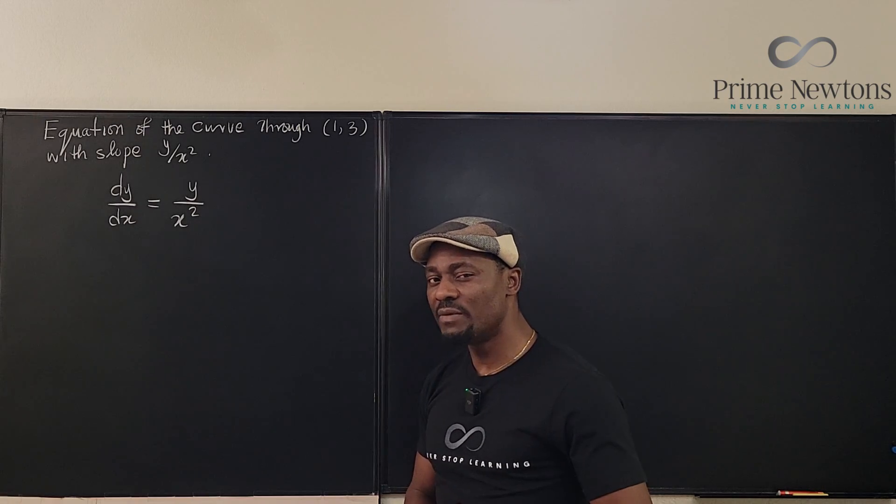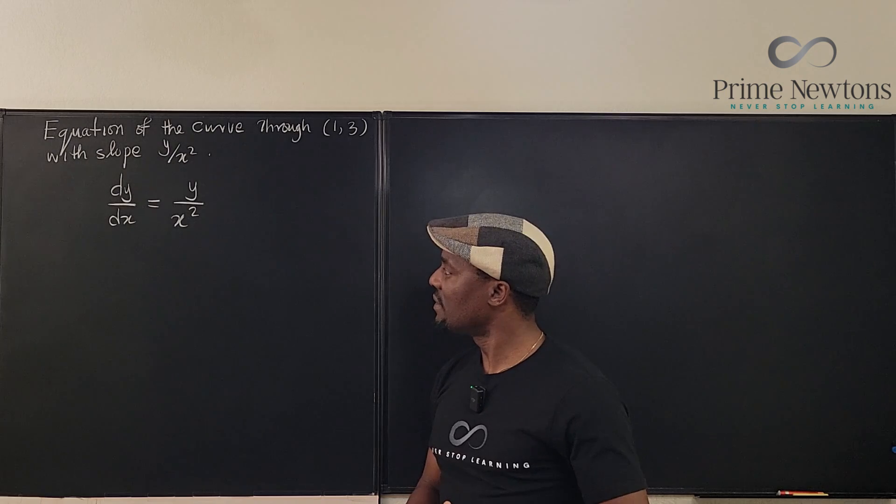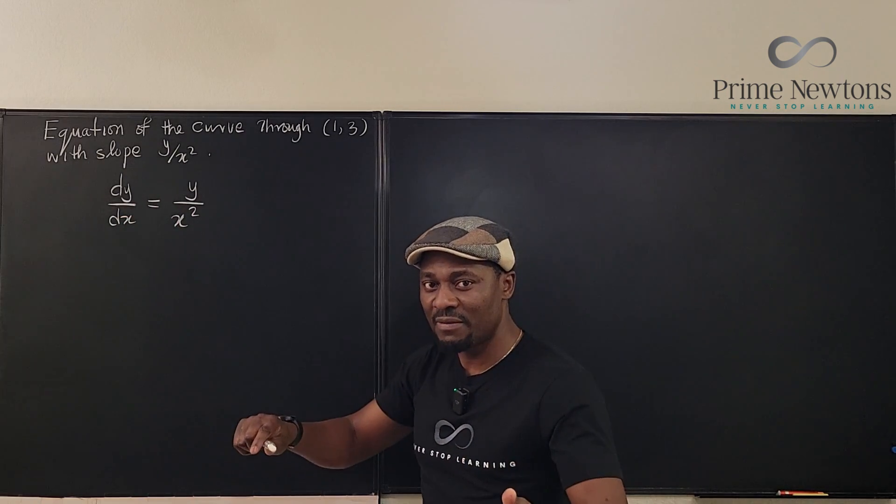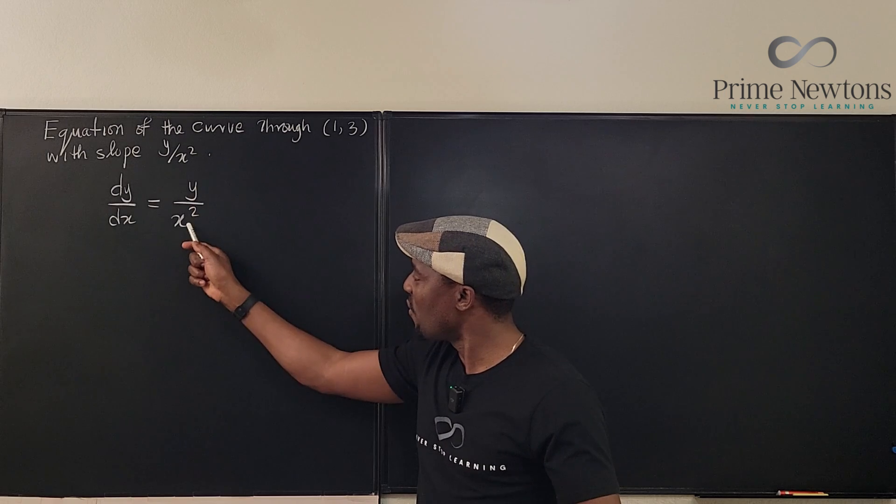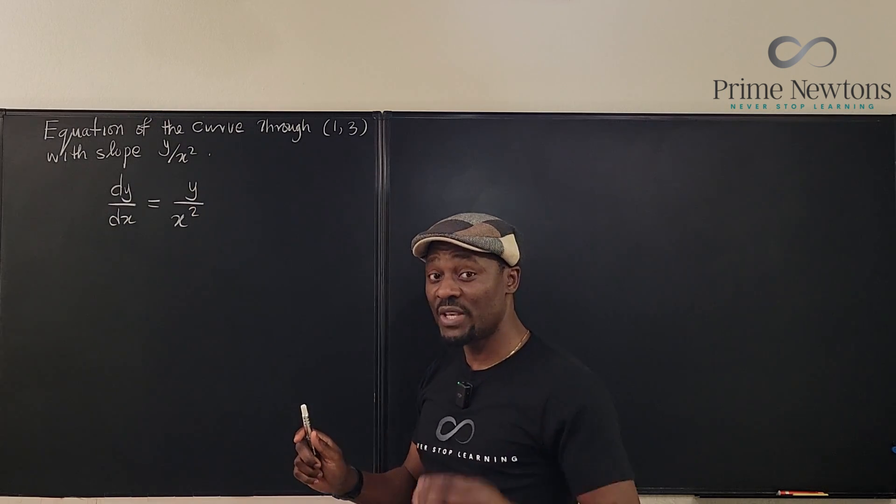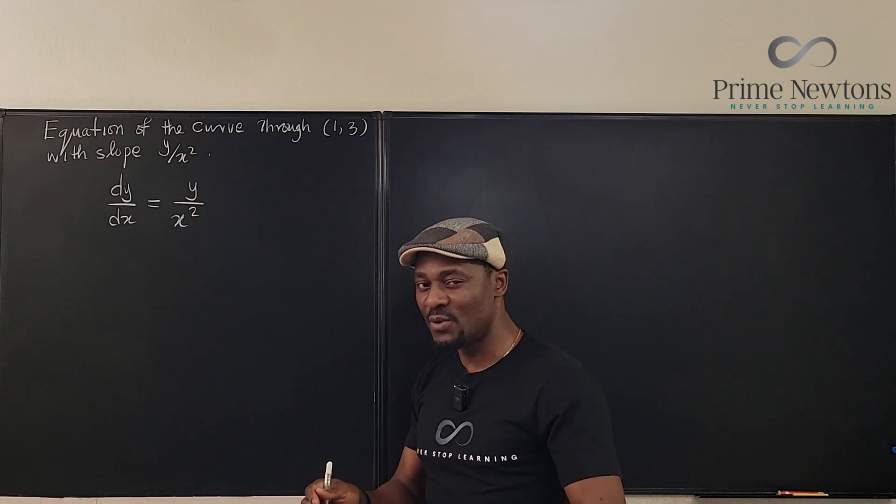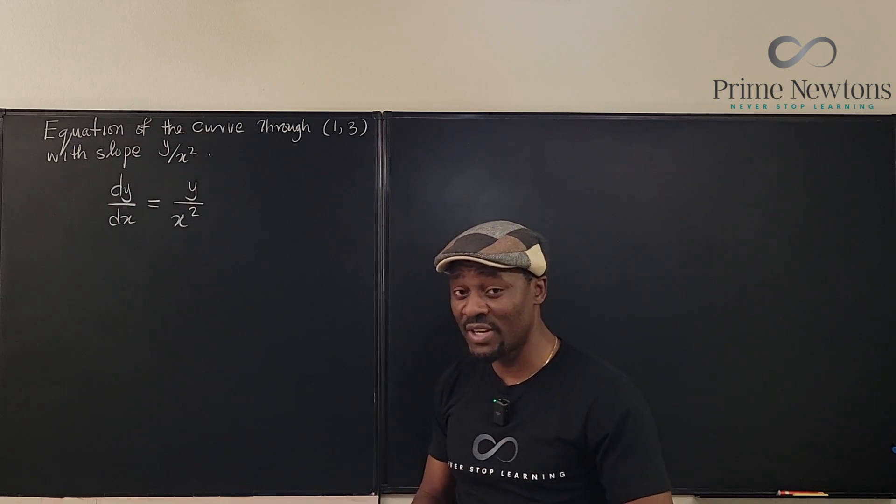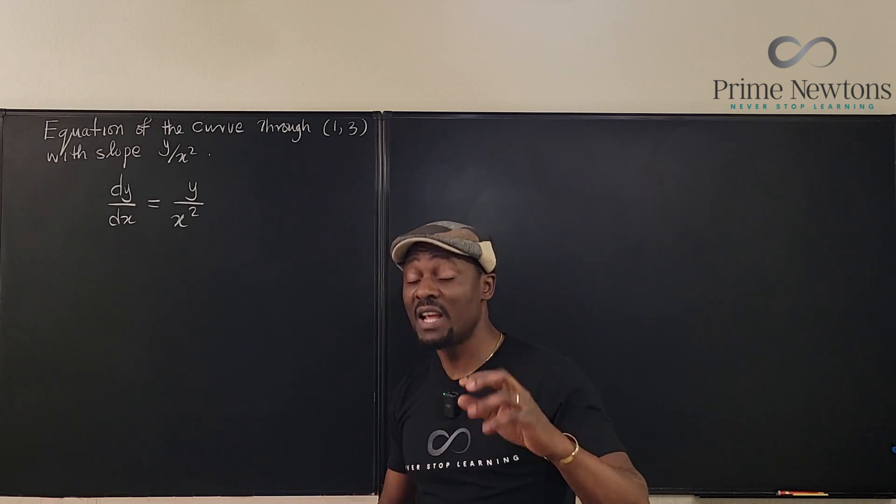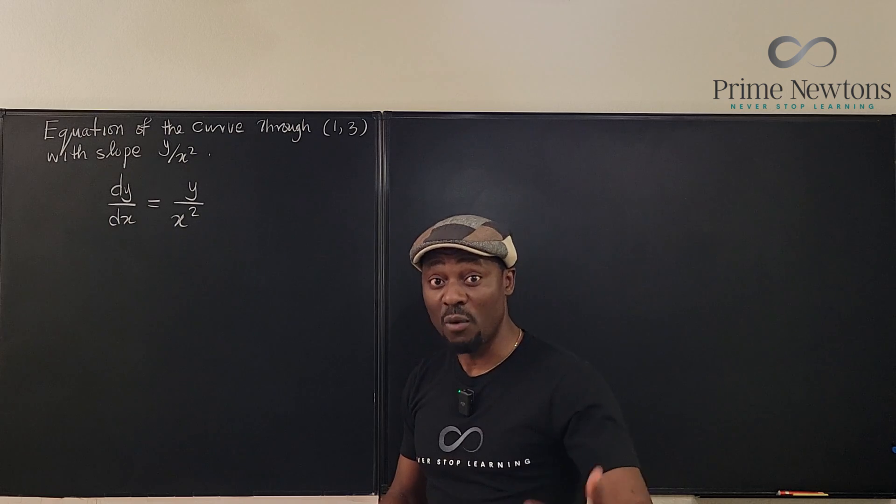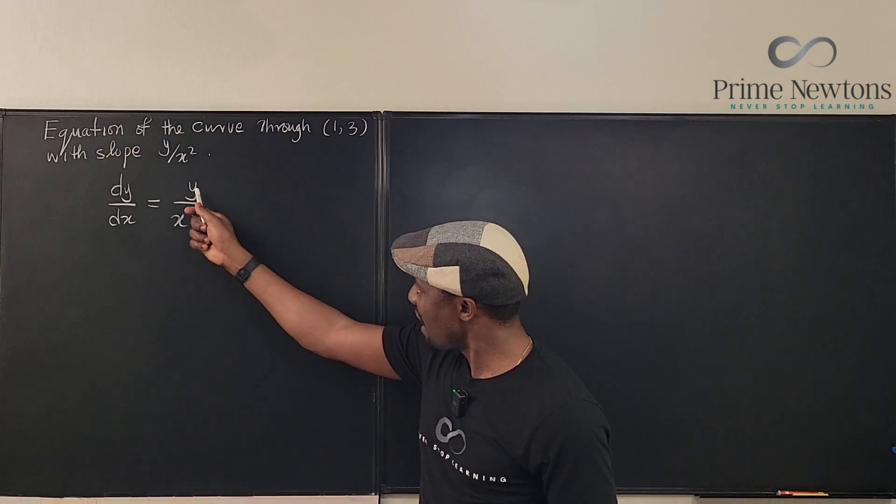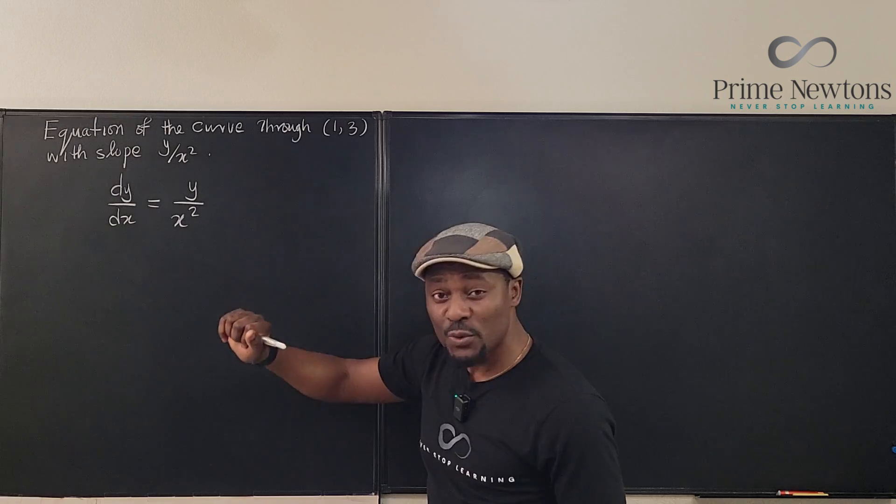What we have is the derivative of the function y, and the derivative of y is y over x squared. And we're looking for y. So clearly, we're trying to solve a differential equation. Remember, a differential equation is any equation that combines any derivative of y with y. So there's a combination.